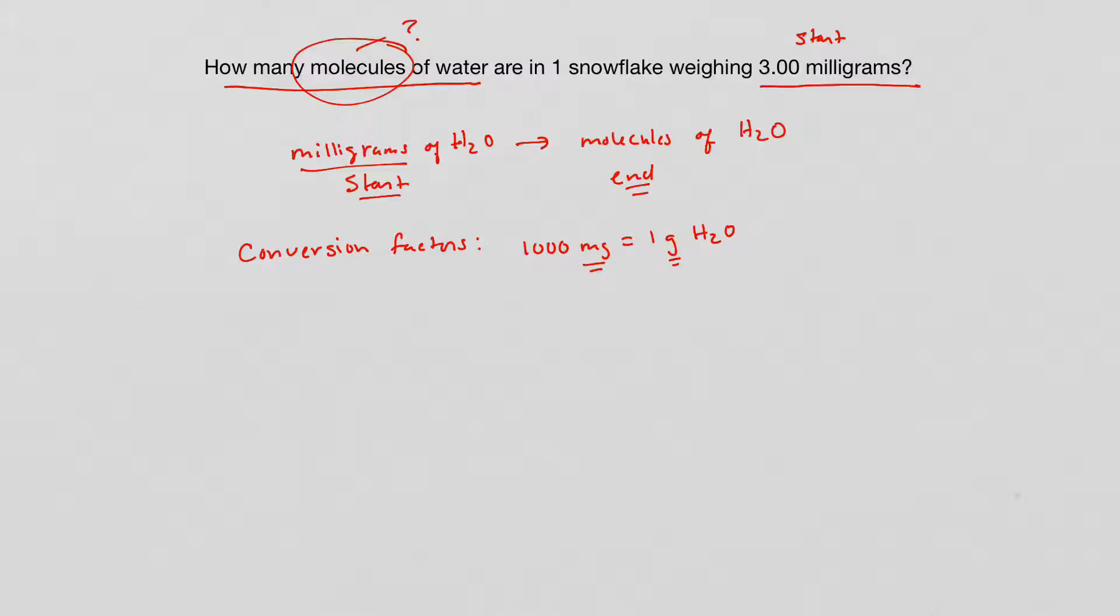So 1000 milligrams equals one gram of water. I also know from my periodic table that if I look up the formula mass of water, we did this in the module, one mole of H2O is the same thing as 18.00 grams of H2O. They're one in the same thing. And then I also know from the definition of a mole that one mole of anything, but we're working with water, is the same thing as 6.022 times 10 to the 23rd molecules of water. So these are all the conversion factors I know. This one came from the periodic table and this one comes from the definition of mole.